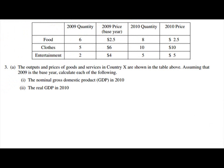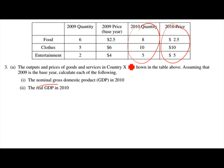The first thing to remember is that real GDP is adjusted for inflation, whereas nominal GDP uses current year prices. So the nominal GDP in 2010 is going to be the 2010 prices times the 2010 quantity.